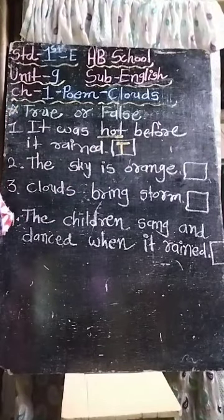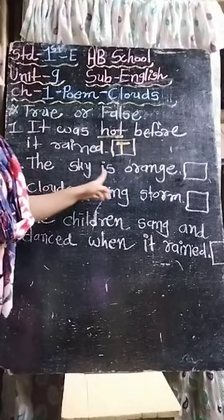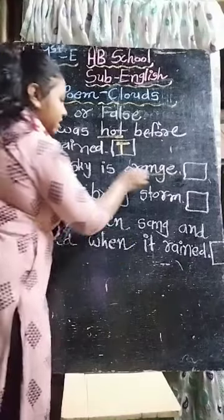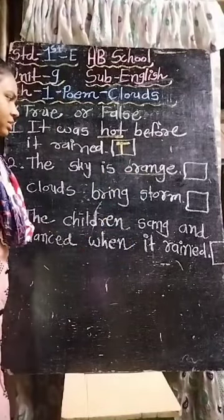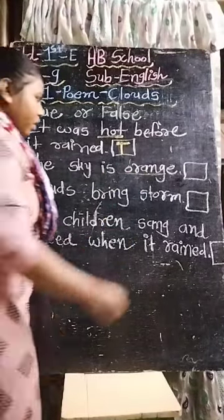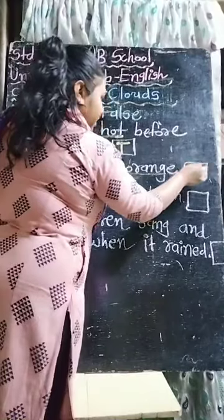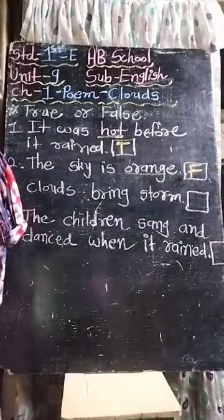Second one: 'The sky is orange.' The sky is orange - किस रंग का है? Is it true or false? False, because the sky is blue.